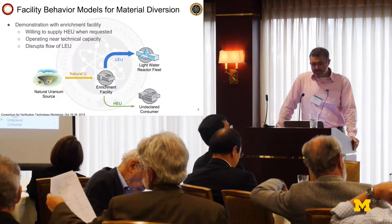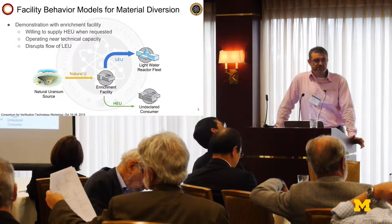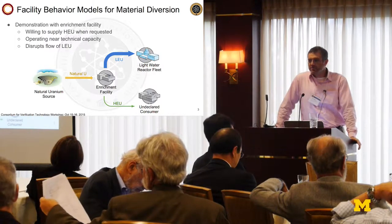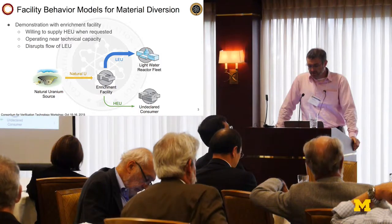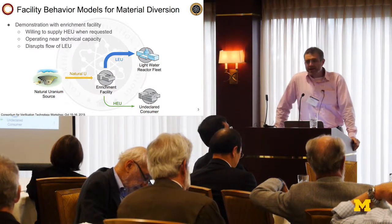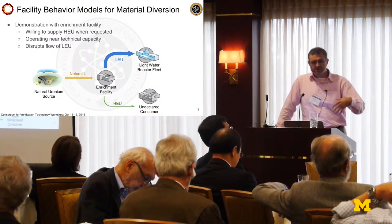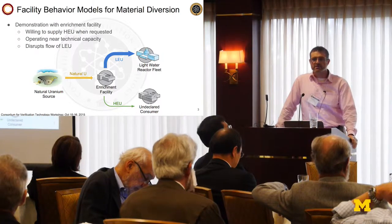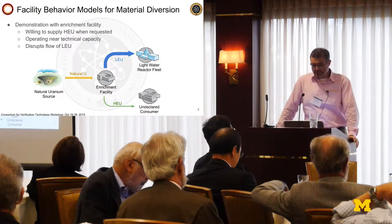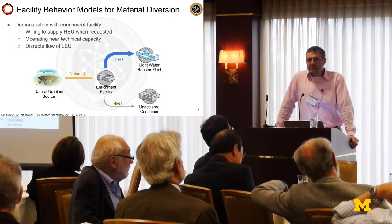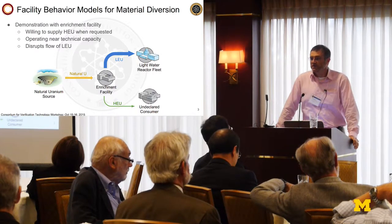For the first piece, we've been looking at facility behavior models as our simple toy problem, where we've modeled a set of facilities interacting with each other. We're focusing on what happens at an enrichment facility that may be inclined to divert enriched material. We have the full light water reactor fleet modeled as a single facility requesting material on a fluctuating basis, an undeclared consumer occasionally requesting high enriched uranium, and an enrichment facility operating near its technical capacity — so that if it satisfies the request for HEU, it limits its ability to provide LEU.